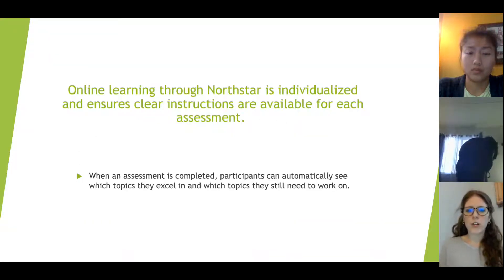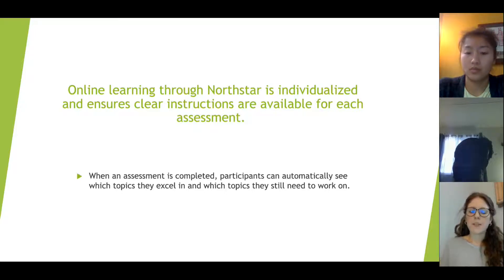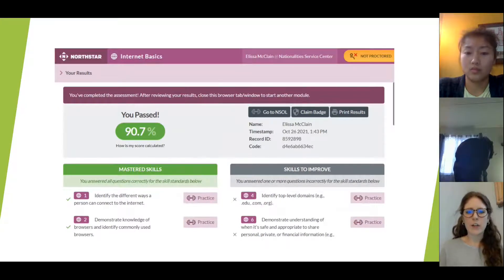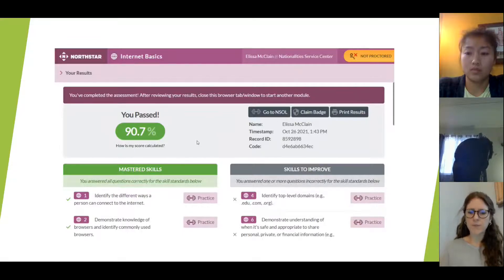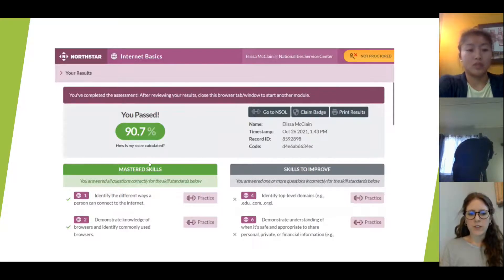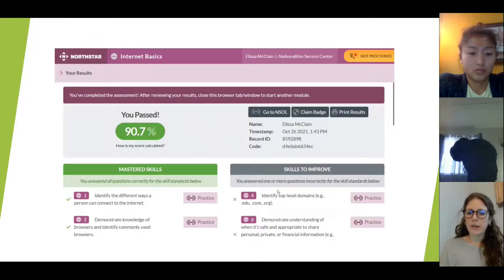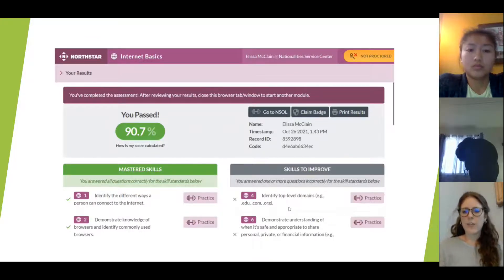Online learning through North Star is individualized and ensures clear instructions are available for each assessment. When the assessment is completed, participants can automatically see which topics they excel in and which topics they will still need to work on. This next screen shows exactly what will pop up when you finish an exam — you'll be able to see the score that you received. I believe you need an 85 or 87 to pass the assessment. On the right, you have options: you could go back to the North Star homepage, claim your virtual badge, or print your results. At the bottom, you can see which skills you mastered within this exam — areas where you did really well. And on the right, there are skills you might need to improve on, with practice links so you can go straight into practice activities for those.